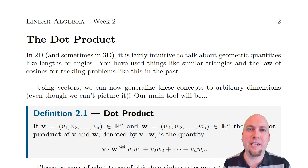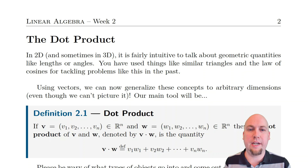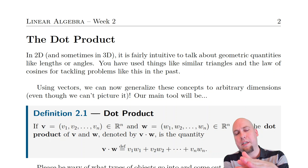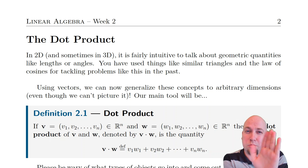Hey folks, my name is Nathan Johnston, and welcome to lecture 4 of introductory linear algebra. Today we're going to introduce something called the dot product of two vectors. It's an operation that roughly describes how much overlap there is between two vectors. If you have two vectors that are very close to parallel, the dot product is going to be large, whereas if they're close to perpendicular, the dot product is going to be small — it captures roughly the angle between them.